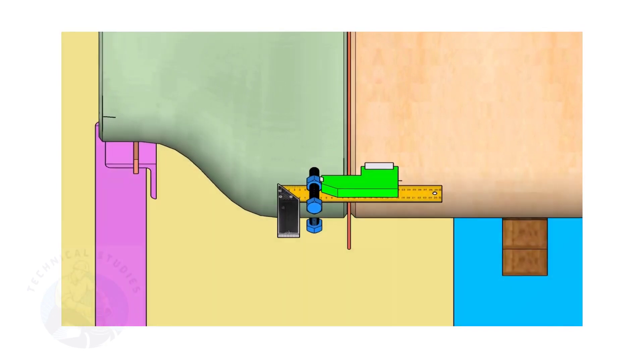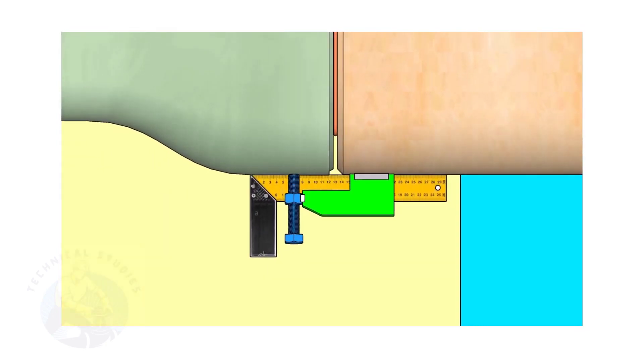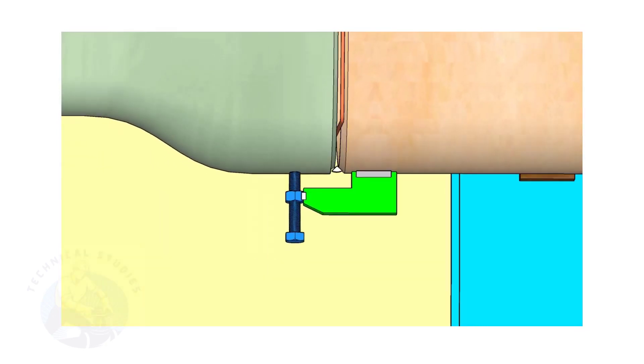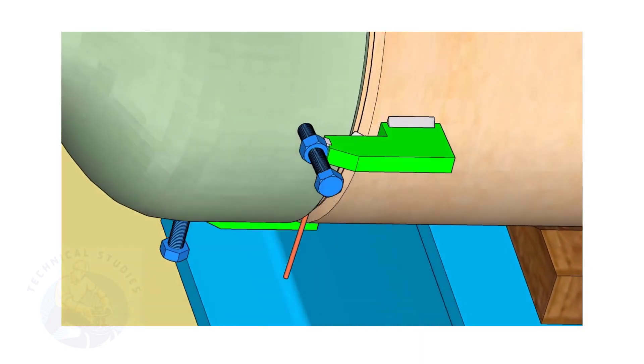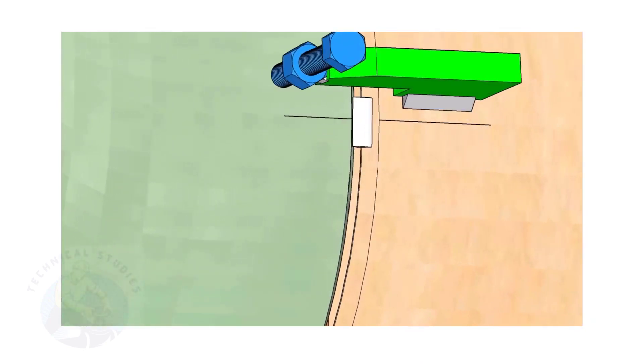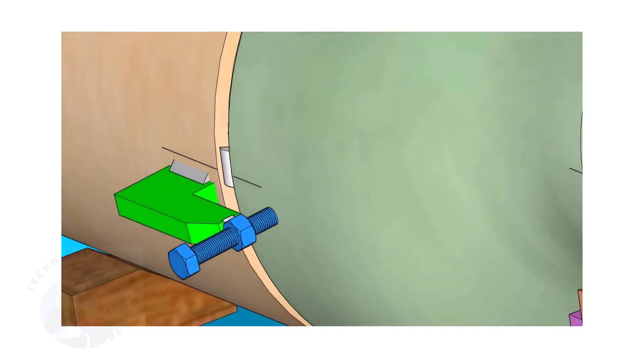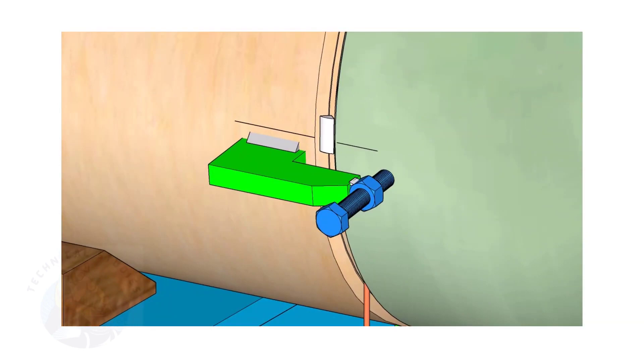Correct the straightness of the joint on both sides. If required, remove the gap rod. Tack weld on both sides. Thank you for watching.